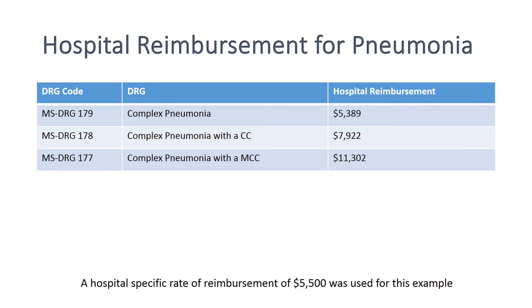If you look at hospital reimbursement for complex pneumonia, DRG-179 pays about $5,400. Complex pneumonia with a comorbid condition pays about $8,000. And DRG-177, complex pneumonia with a major comorbid condition, pays $11,300.